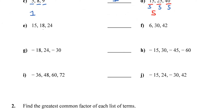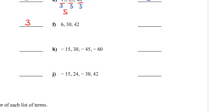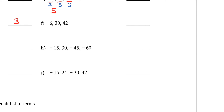For letter E, the biggest number that divides all three numbers evenly is 3. 3 definitely divides 15, 18, and 24, so 3 is the greatest common factor. For letter F, the number that comes to mind right away is 6. 6 definitely divides all three numbers evenly and is the biggest number possible, so 6 is the GCF.